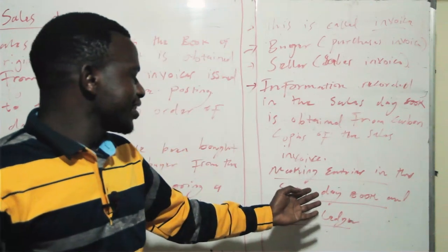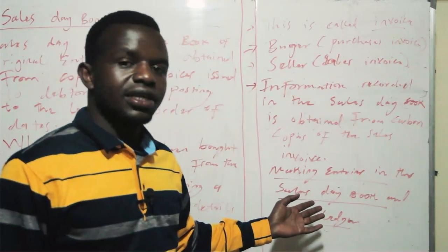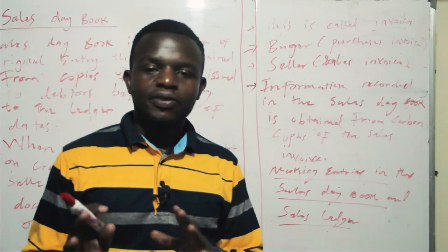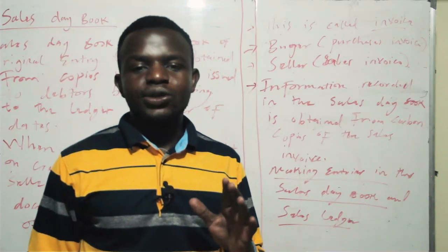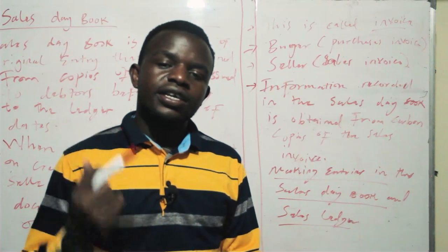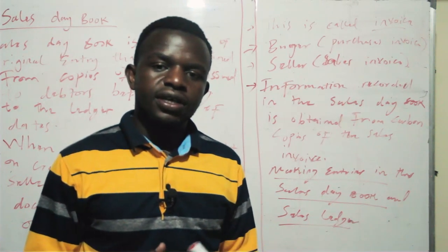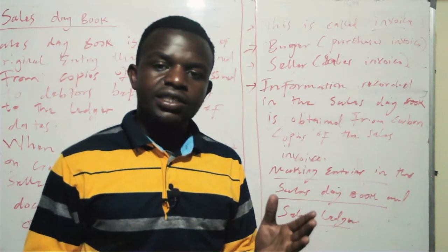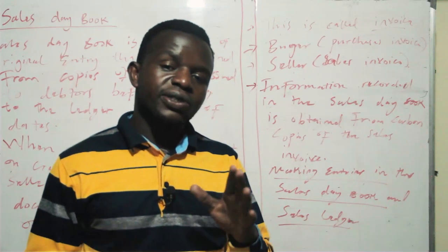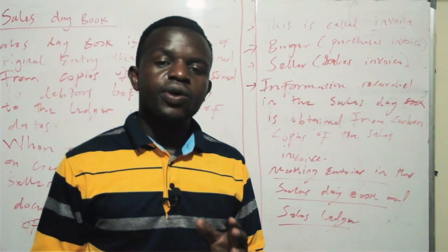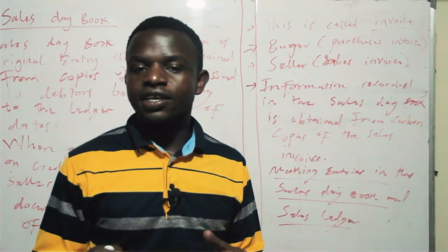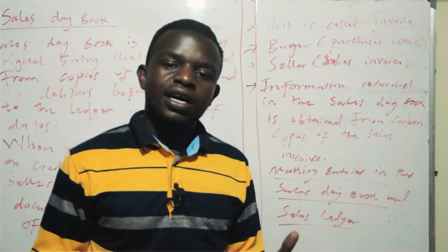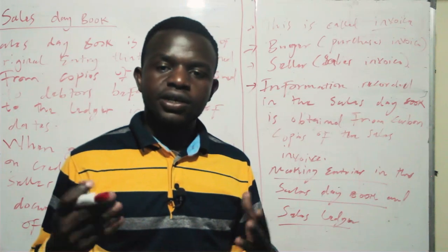Information in the sales day book is recorded and after recording, you find the total. That total is going to show the credit sales for that period. Then for each personal account in the sales ledger, those personal accounts have to be debited — because the debtors will be receiving goods that are not paid for, since the sales day book records credit transactions.